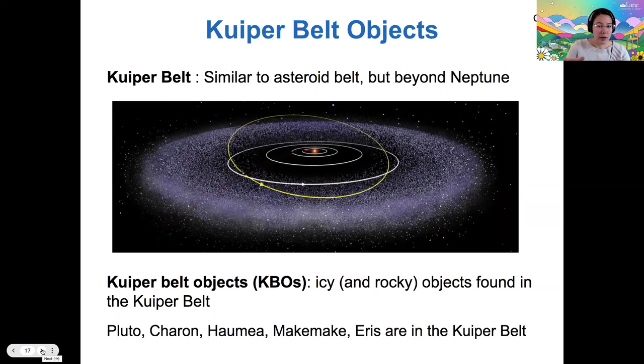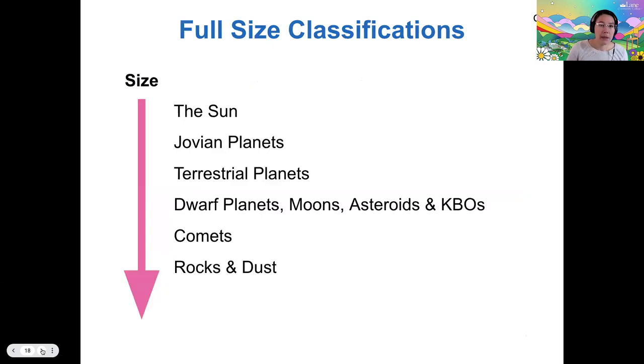All right. So there's kind of an overview of the solar system. We've got our terrestrial worlds, our asteroid belt, our Jovian planets or gas giants, and then our Kuiper belt. So if I put all of these now on our size classifications, dwarf planets, and also moons of various planets, asteroids and KBOs, these are all smaller than terrestrial planets, but they're larger than comets.